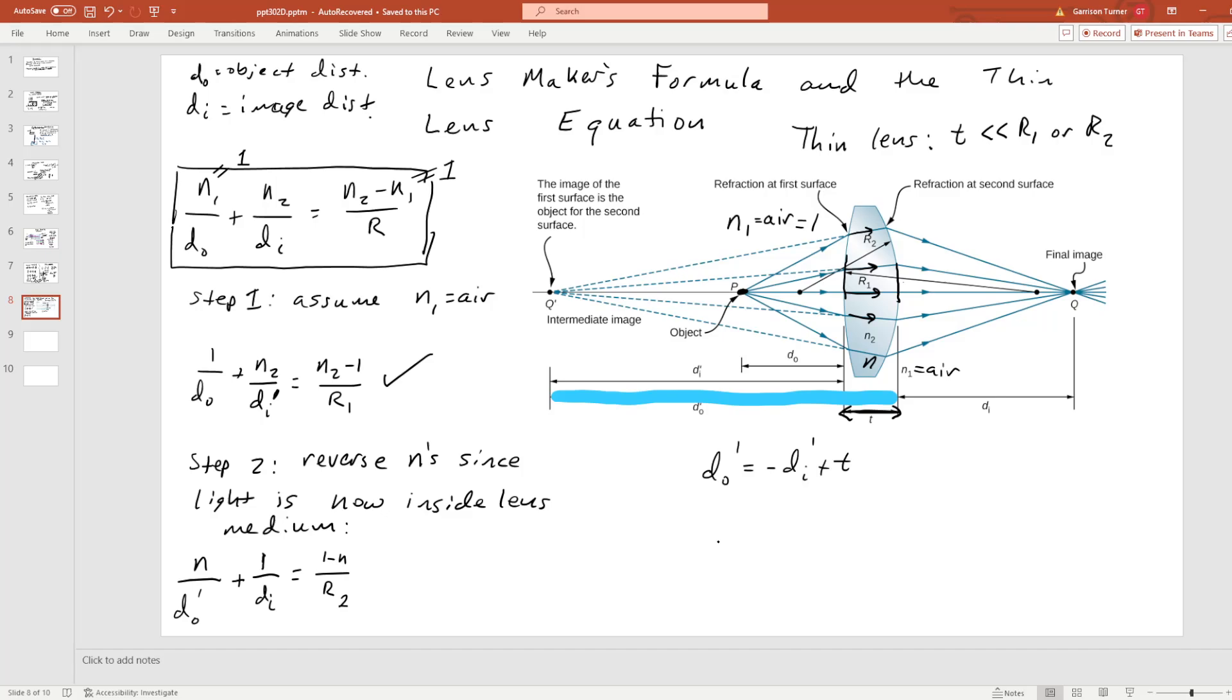So with that, we can plug this into this equation, and so I'm going to get N/(-D_I' + T) + 1/D_I = (1 - N)/R_2. Now, here's where the thin lens approximation comes in. If this is the case, then we can neglect the T, it becomes negligible here, and this result can now be written as N/negative, because now I'm just going to pull this negative sign and pull it out in front of the entire fraction.